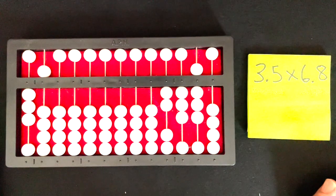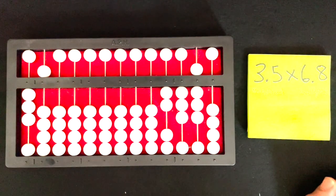And that's how I do a multiplication problem with decimal points on the abacus using the counting method.